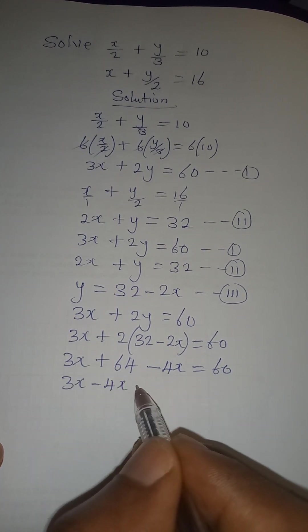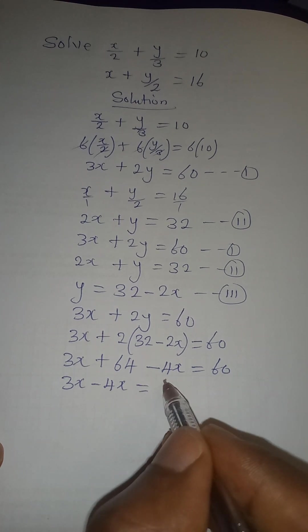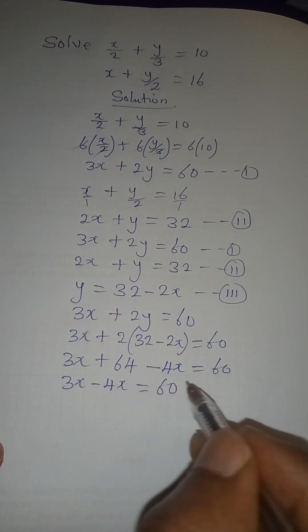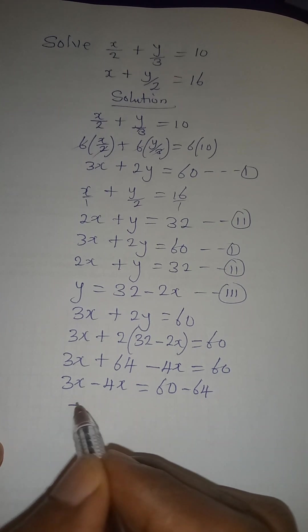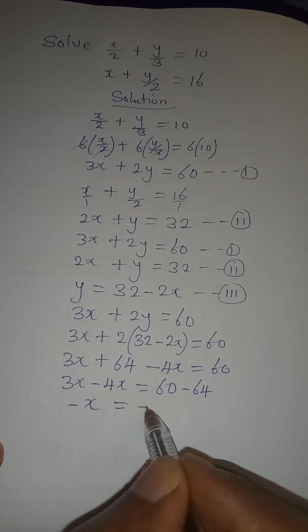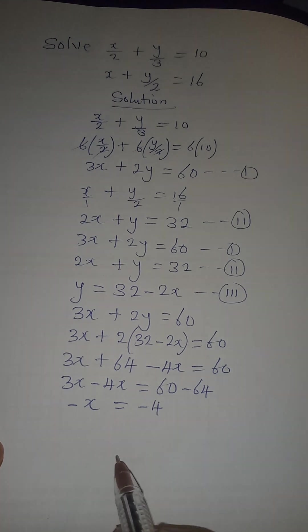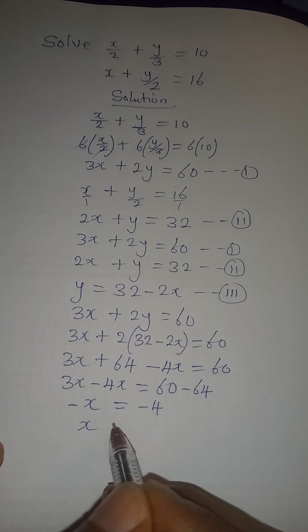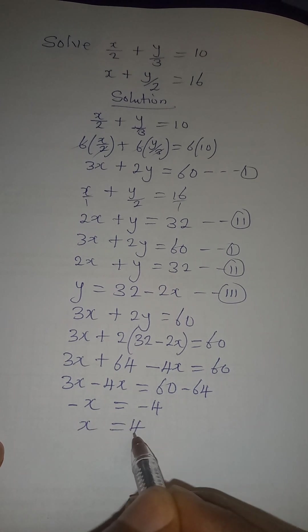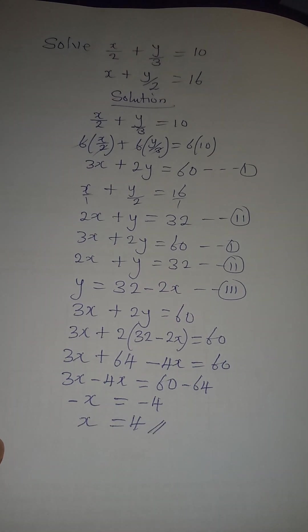3x minus 4x, which is equal to 60 minus 64. So here we have minus x to be equal to minus 4. Now the negative can always cancel each other, so x is equal to 4.